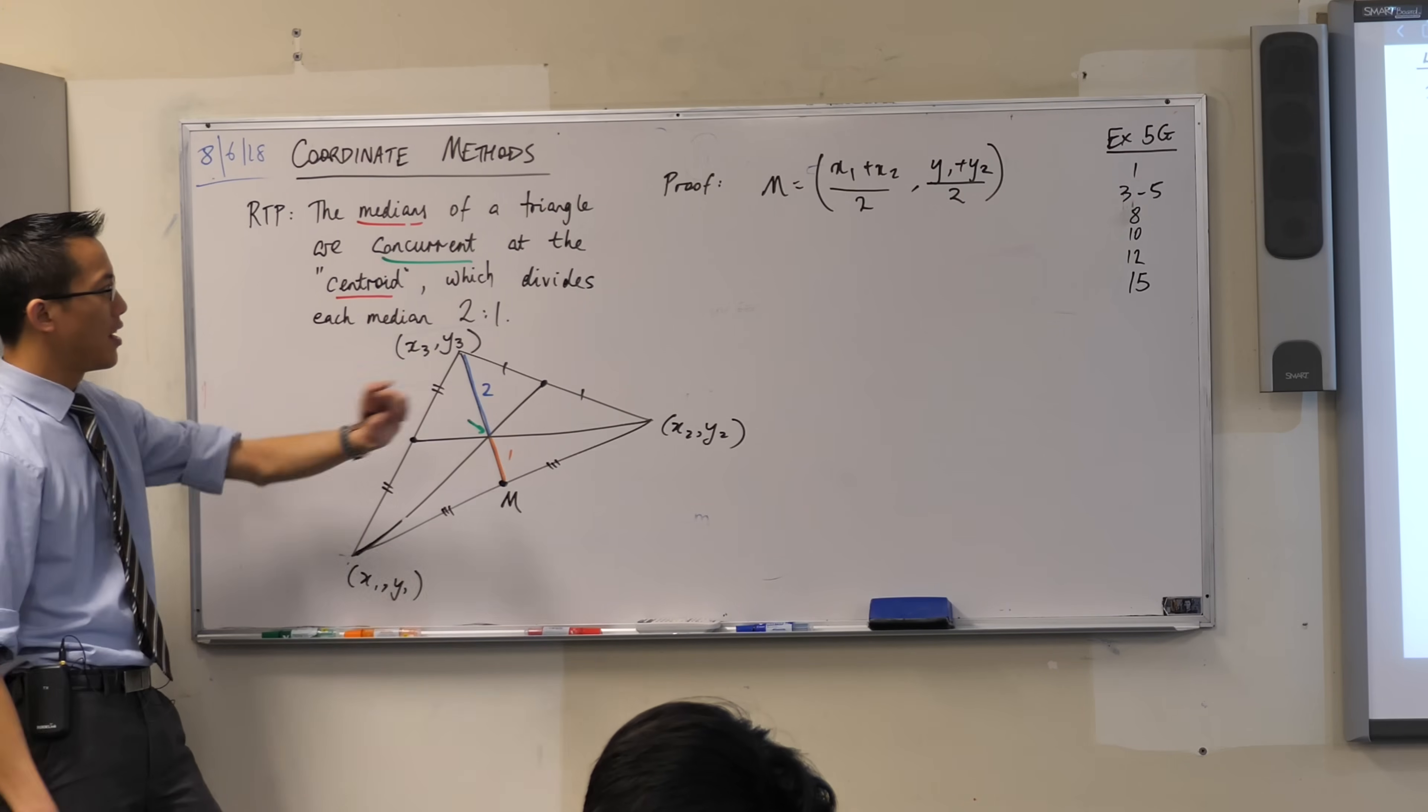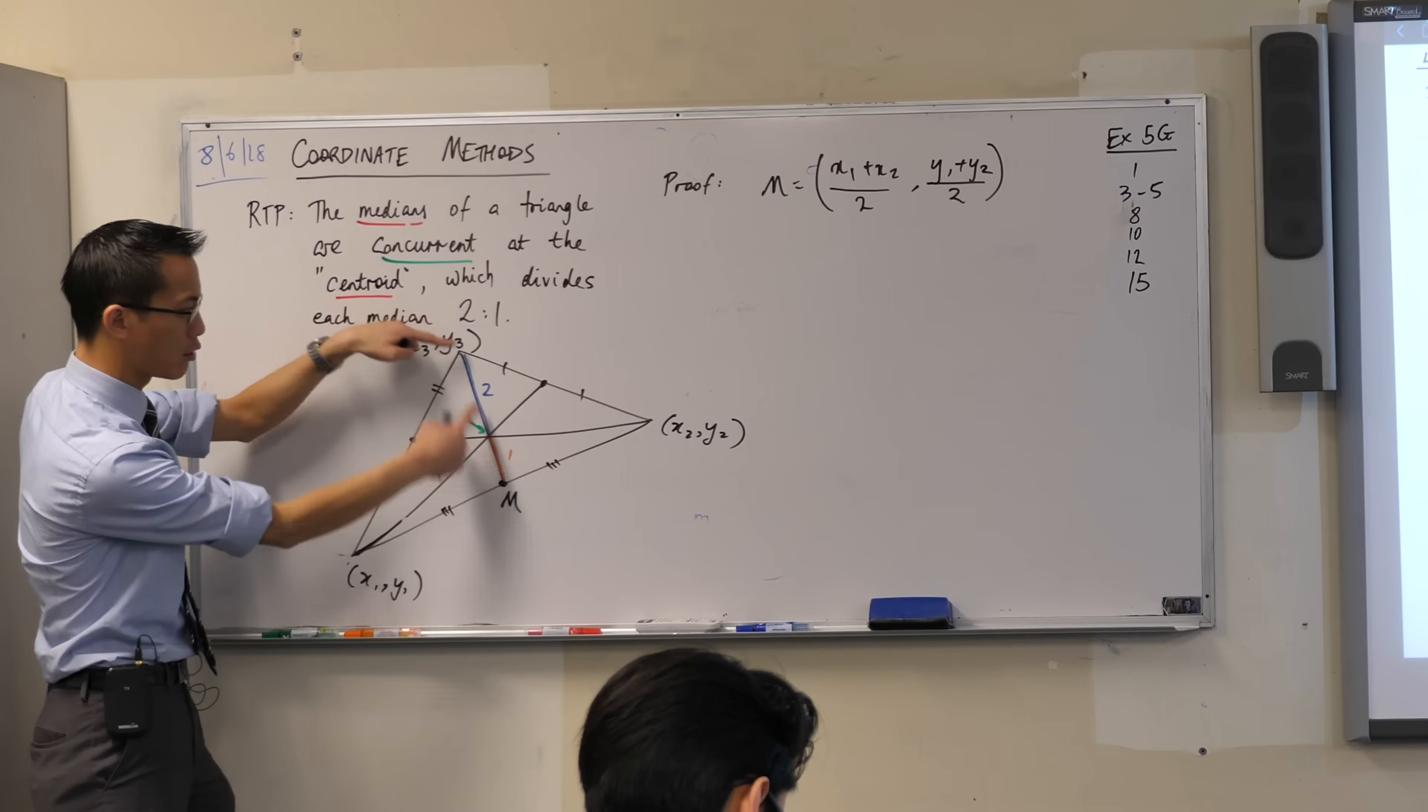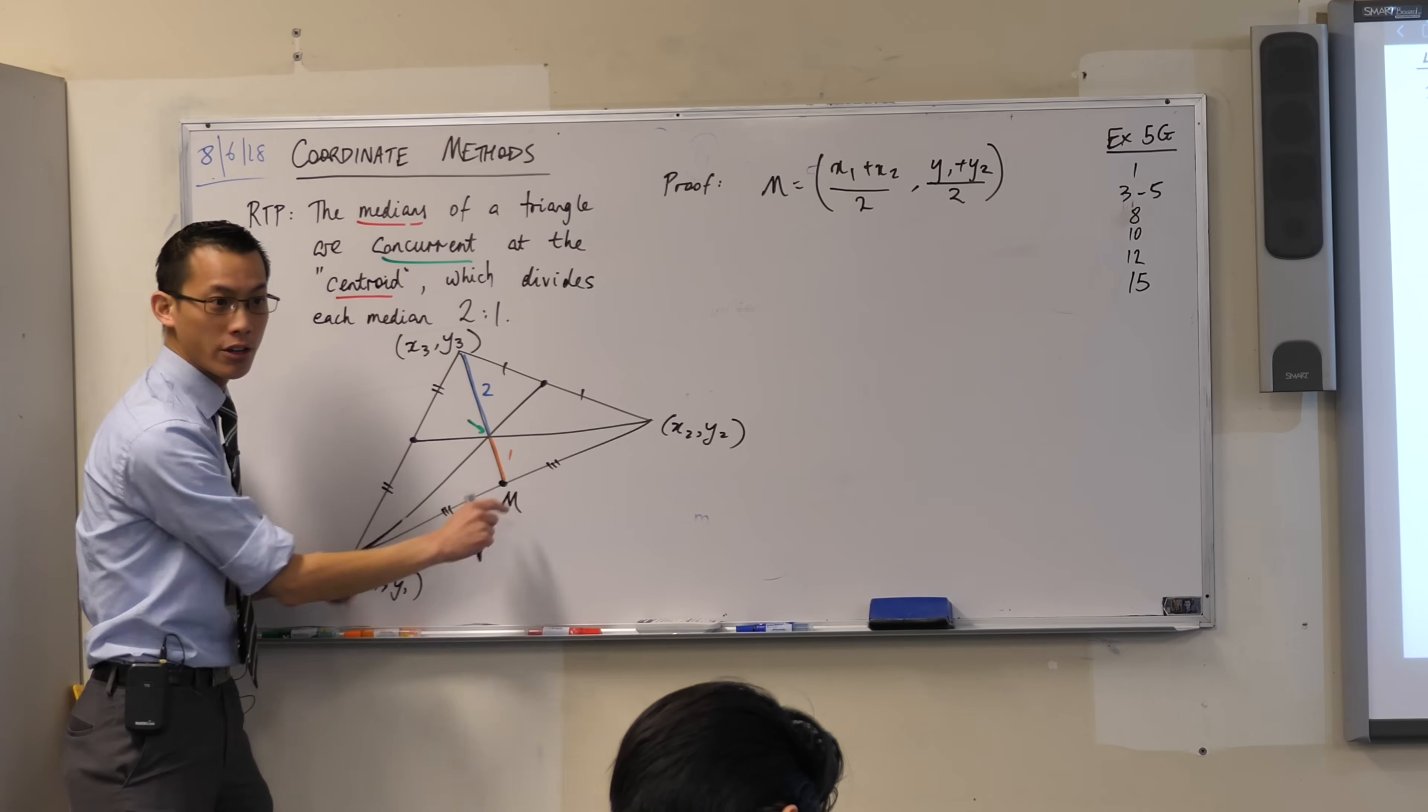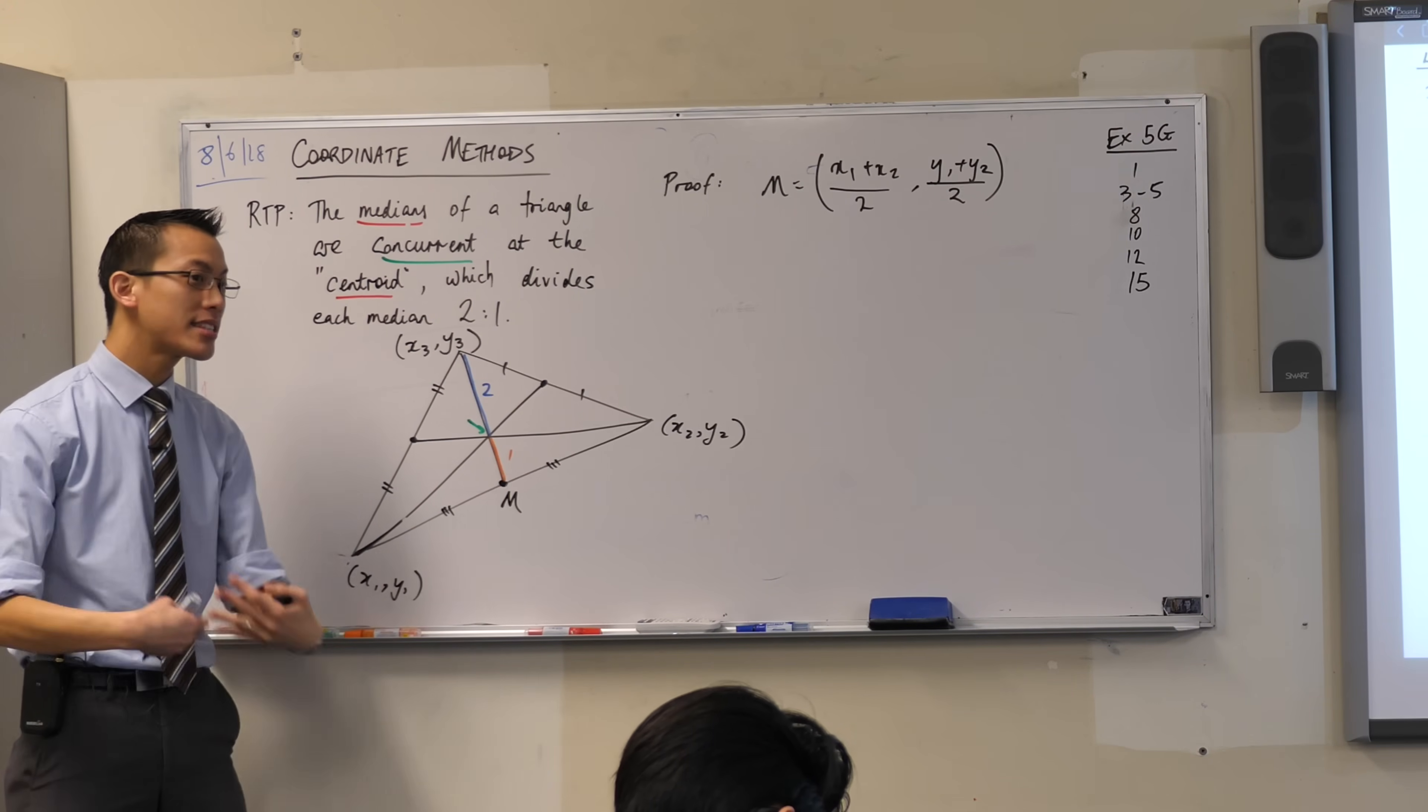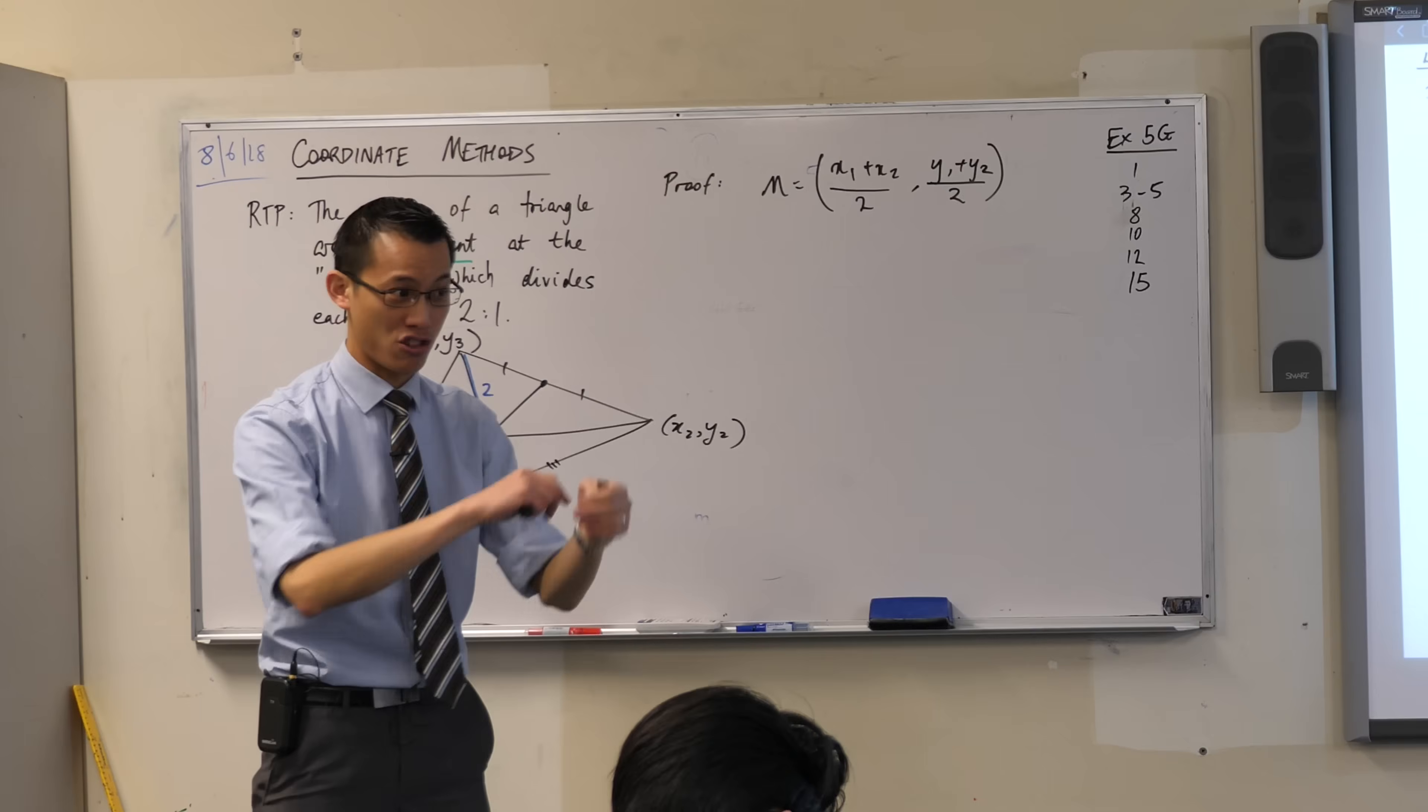That is the midpoint of this interval, which gives us that median, okay? Now, this property is saying that if you have a look at this, you should get this ratio 2 to 1. You should, okay? So let's see what happens, because we now know this coordinate geometry knowledge.